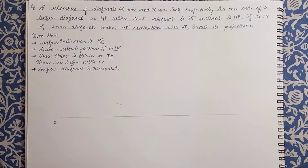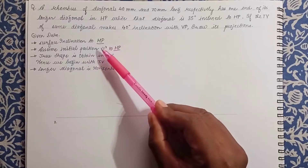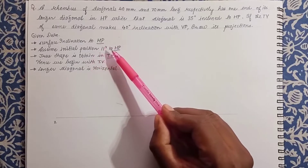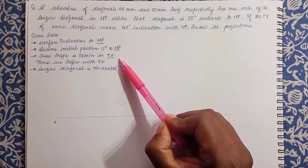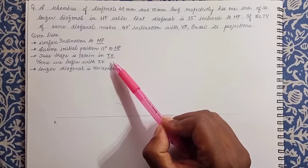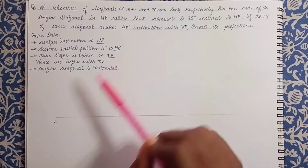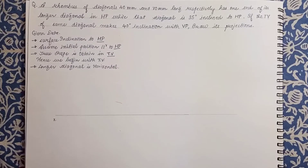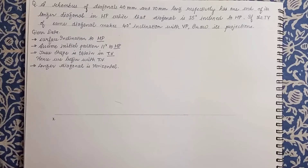When you read the question, there are a few things to ask yourself. The surface inclination is with HP, so as the surface is inclined to HP, we assume that in the initial position it is parallel to HP. Therefore the true shape will be obtained in the top view — hence we will begin with the top view. The view in which you get the true shape is where you start.